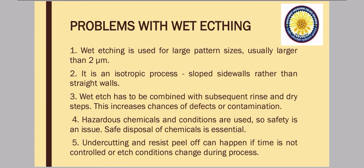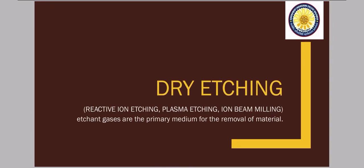Undercutting and resist peel off can happen if time is not controlled or etch conditions change during the process. Like if temperature changes, temperature is very low or very high, then undercutting and resist peel can happen. Resist peel means when very strong etchant solution has removed excessively the layer and along with that your resist has also removed. We discussed this resist peel in our previous lecture.